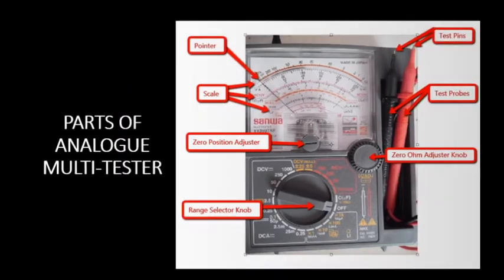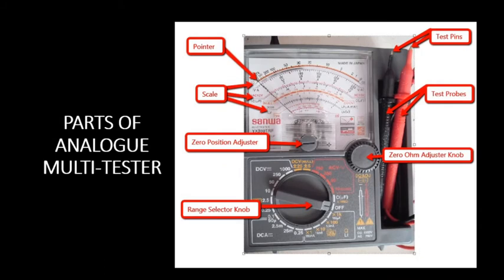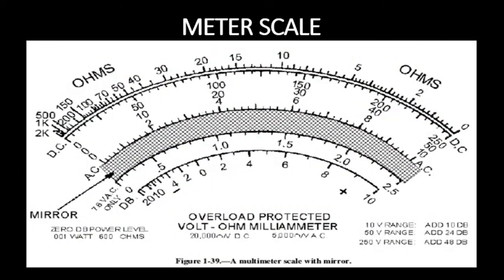Shown in the picture are parts of the multimeter. The pointer indicates the value to be read. The scale is the part where you can read the value, including the ohmmeter scale, voltmeter, and ammeter. Zero position adjuster is used to adjust the pointer to zero volts. The range selector knob selects the desired range to be used. Test pins are the tip of the prod. Test probe or prod, red is positive and black is negative. Zero ohm adjuster knob is used to calibrate the resistance to zero before starting resistance test.